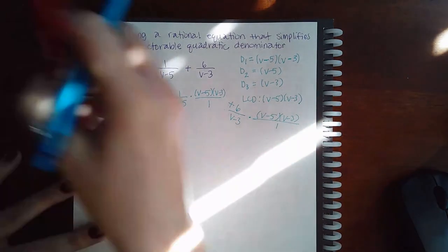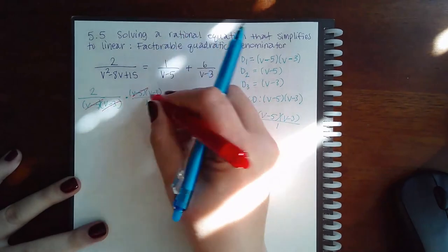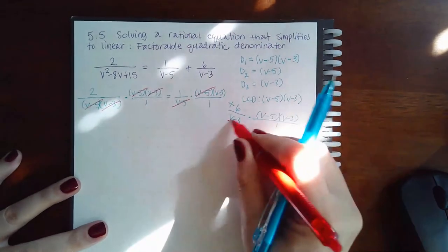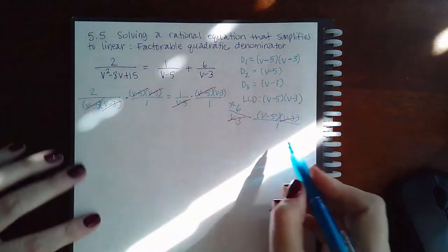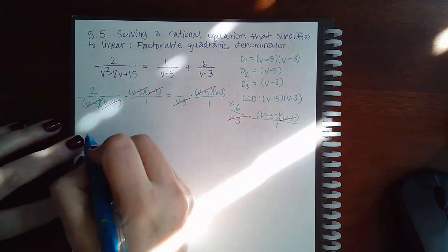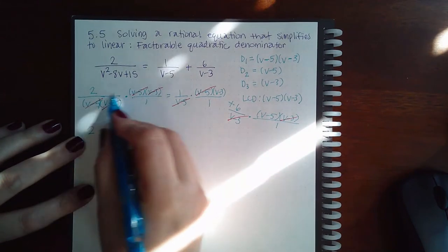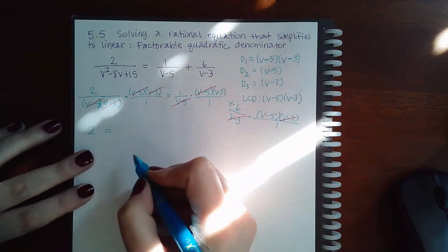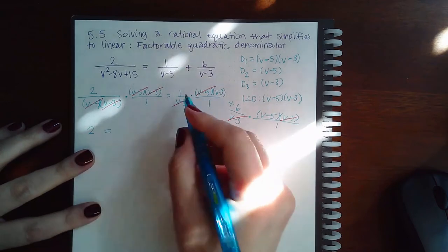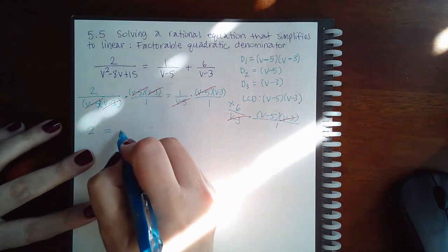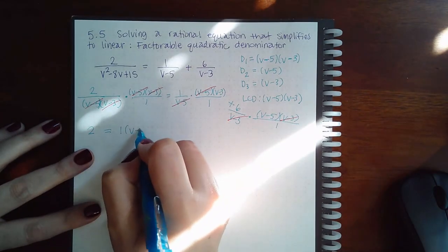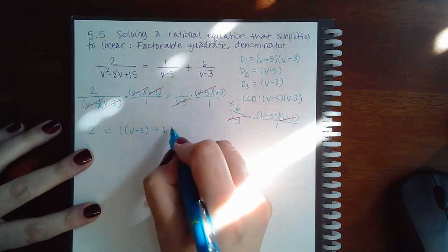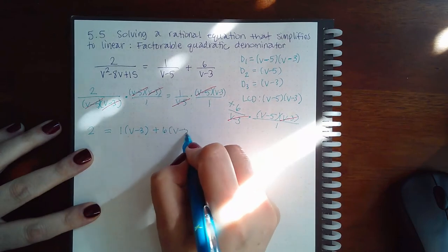Now these factors are going to cancel, these are going to cancel, this one's going to cancel, and this one's going to cancel. So what do I have left? I have 2 all by itself — since the only denominator is 1, I don't need to write it as a fraction. Here I'm going to end up with 1 times V minus 3, and here I'm going to end up with plus 6 times V minus 5.